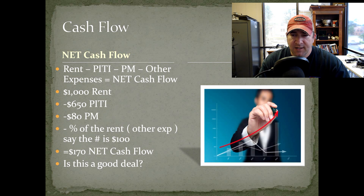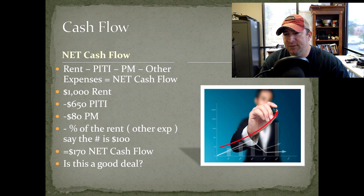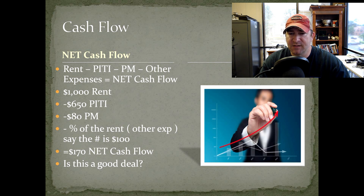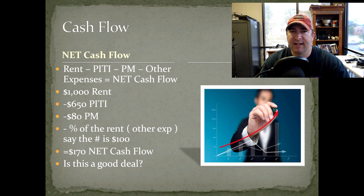Now we're going to talk about net cash flow. The difference between net and gross cash flow is that there are additional expenses factored into the pro forma. The formula is rent minus PITI, minus the property management fee, minus other additional expenses, to equal your net cash flow. Going back to the example: $1,000 in rent, minus $650 mortgage, minus $80 property management, minus $100 for other expenses, leaves you with $170 in net cash flow. Is that a good deal? For some yes, for some no — every investor has their own criteria.